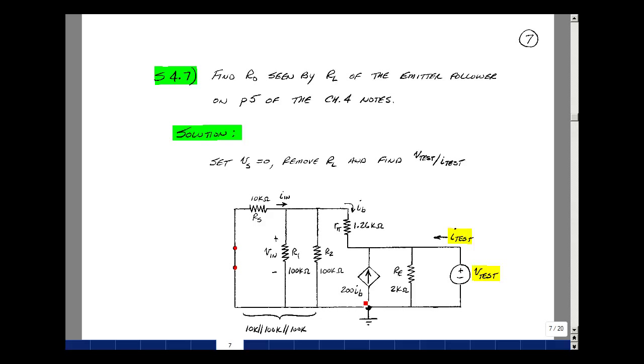Our circuit has a controlled source in it, and this is not a resistor. It is a manipulation of a current controlling another current. So you have to apply a test voltage and measure a test current. Their ratio would be the resistance seen looking in.